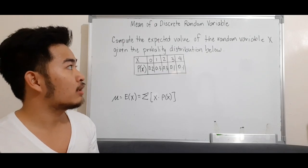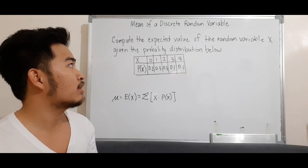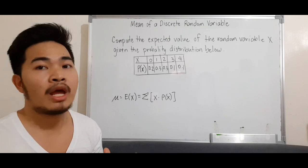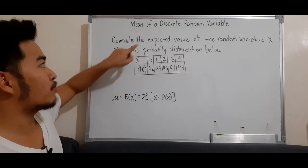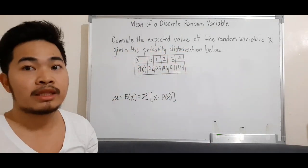Compute the expected value of the random variable x given the probability distribution below. So let's say this is the probability distribution and we are going to compute for the expected value or the mean.